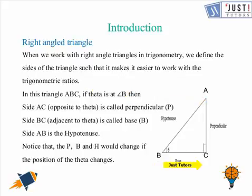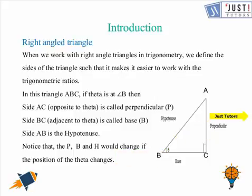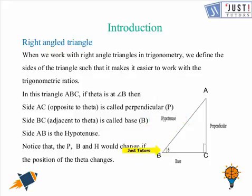Let us suppose that ABC is a right angled triangle which is right angled at C. Now if we are talking about angle B, then we will name all the sides of this triangle with respect to angle B. The side that is opposite to this angle is always known as the perpendicular. The side which is adjacent to the angle that we are talking about becomes the base. The third side is always the longest side of the right angled triangle and is known as the hypotenuse.